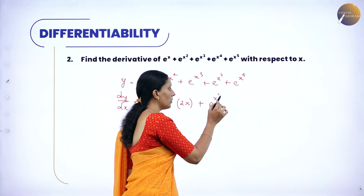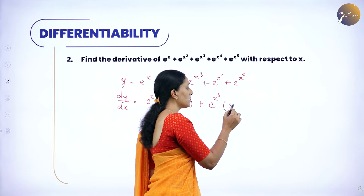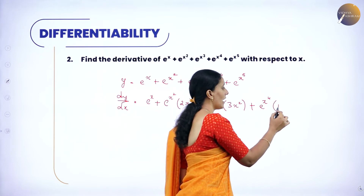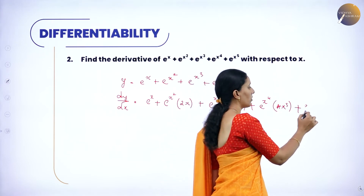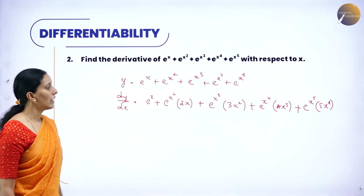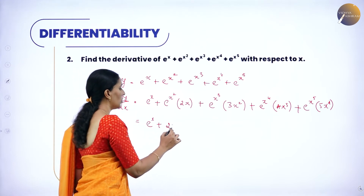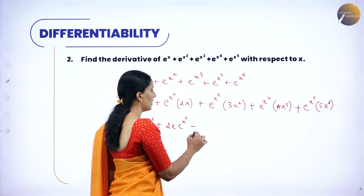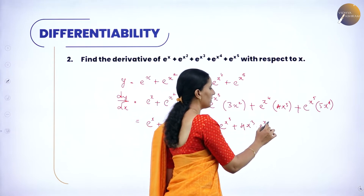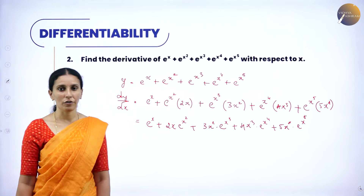Using the chain rule: derivative of e^(x²) is e^(x²) times the derivative of x², which is 2x. Next, derivative of e^(x³) is e^(x³) times 3x². Then e^(x⁴) gives 4x³, and e^(x⁵) gives 5x⁴. So the derivative is e^x + 2x·e^(x²) + 3x²·e^(x³) + 4x³·e^(x⁴) + 5x⁴·e^(x⁵).